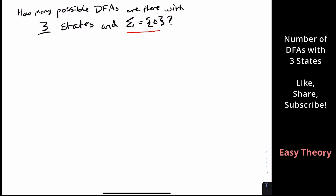We can figure out how many possible DFAs there are. For three states, we have eight possibilities for which states are final, because we have two to the three — all possible subsets of the states. Since there are three states, the number of possible subsets is two to the number of states, which is three in this case.